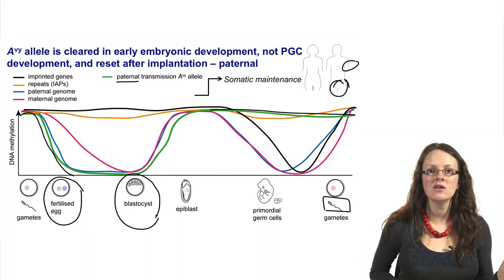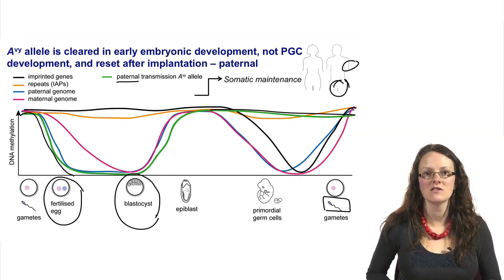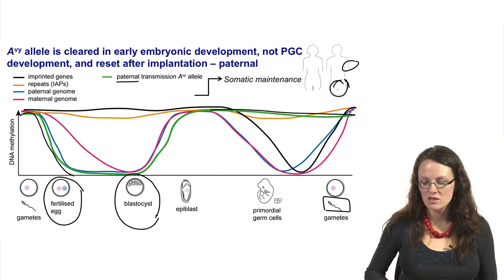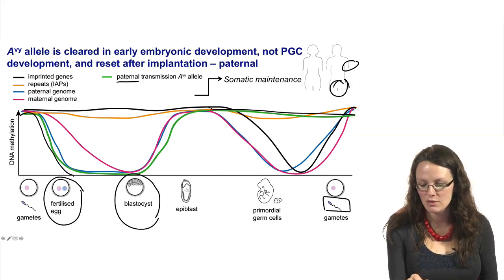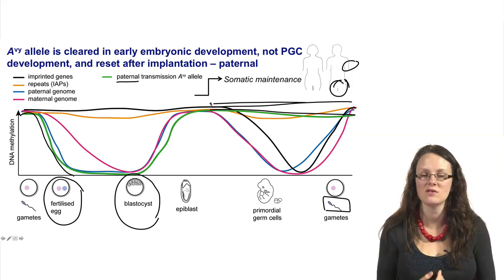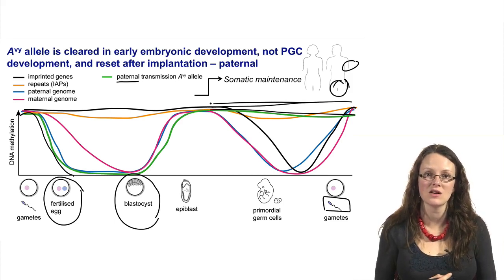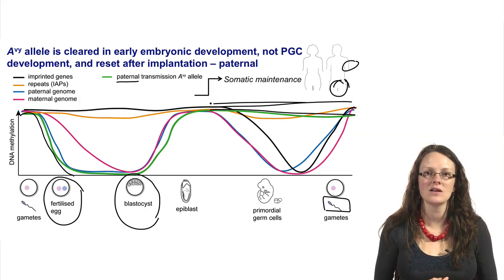Since the clearing has happened completely in a case where we don't see epigenetic inheritance, this is perhaps what you might expect. It wasn't necessarily expected that they would escape reprogramming during primordial germ cell development, but given that you don't see transgenerational epigenetic inheritance following paternal transmission, you wouldn't expect some persistence of epigenetic marks in this case.